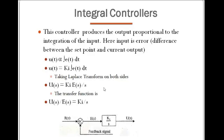Coming to the integral controller — this controller produces an output proportional to the integration of the input; it is not directly proportional. It will integrate the error and give the output. Error is my input, and it is nothing but the difference between actual and desired values. The control action is directly proportional to the integral of e(t) dt — integration means taking the entire past history of the error.